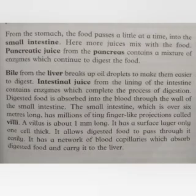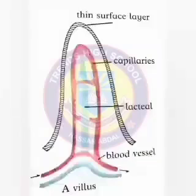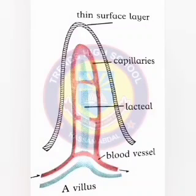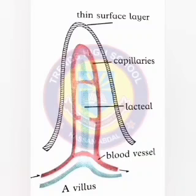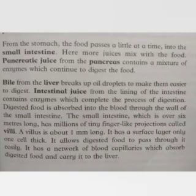The small intestine, which is over six meters long, has millions of tiny finger-like projections called villi. Villi are about one millimeter long and have a surface layer only one cell thick. They allow digested food to pass through easily and have a network of blood capillaries which absorb digested food and carry it to the liver.